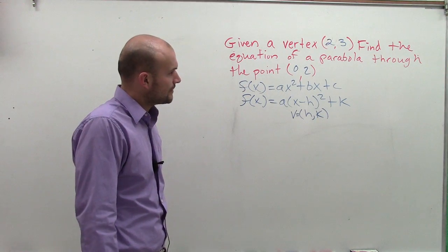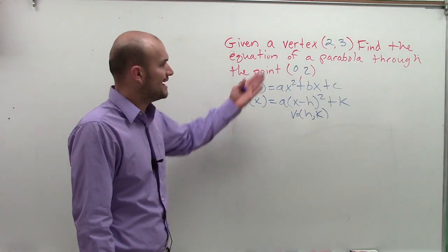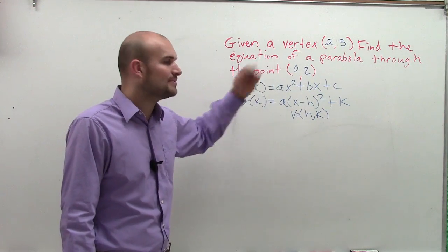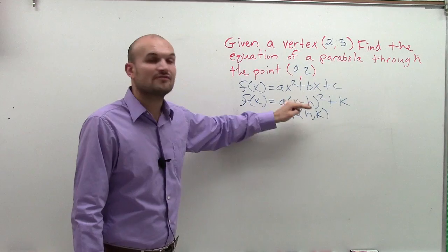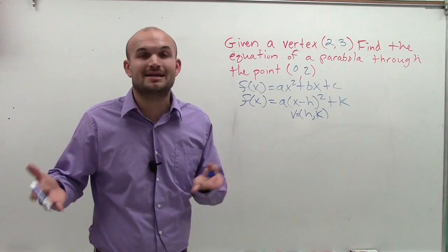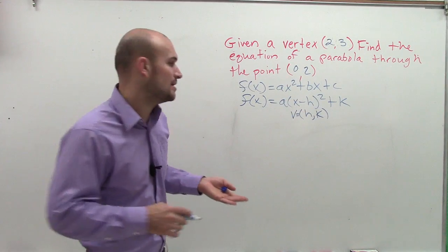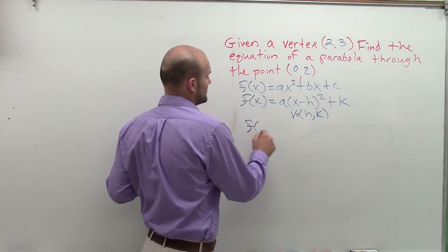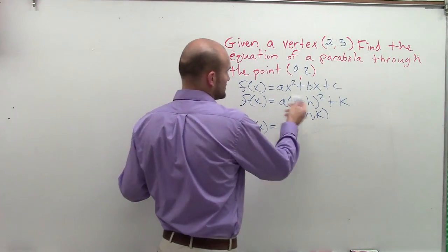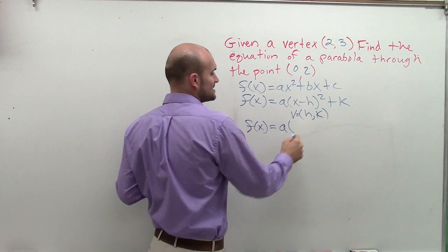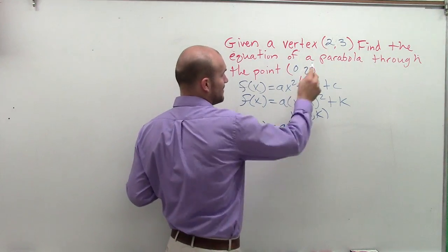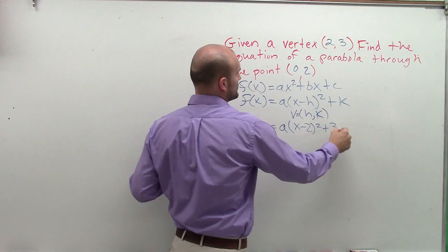So if we are given the vertex, I'm probably going to want to use the vertex form because right now I need to find a formula. I need something. I need to be plugging some values in. So what I have now is f(x) equals, I don't know what a is. a is going to remember me, my dilations. But my vertex can be x minus 2 squared plus 3.